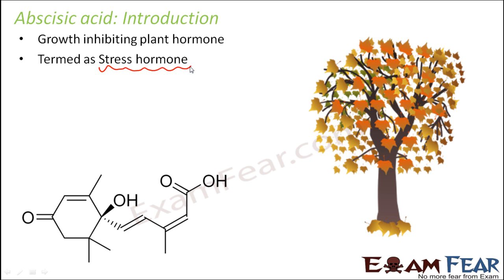Similar is the case here. Abscisic acid wants to stop the growth of the plant and it does a lot of things — for example, it induces dormancy in seeds, and it causes abscission, meaning it makes the plant lose its fruits and leaves very early. So the plant experiences stress, and that is why this hormone is known as the stress hormone. Abscisic acid is often abbreviated as ABA.